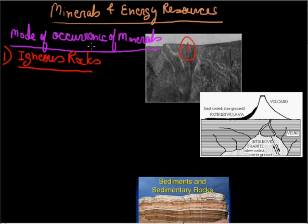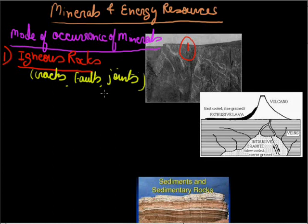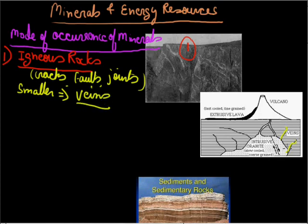In the igneous rock and also in the metamorphic rocks, minerals are found in cracks, faults, joints, etc. When they are small, these are known as veins. As you can see here, this is a vein. It is intrusive igneous rock. Similarly there are some other veins you can see. It means small cracks or small joints. Here we find minerals because these are actually the magma which becomes solid.